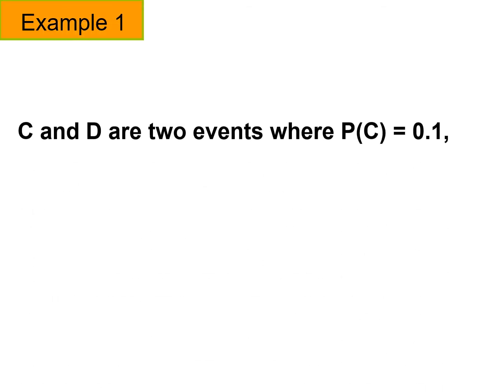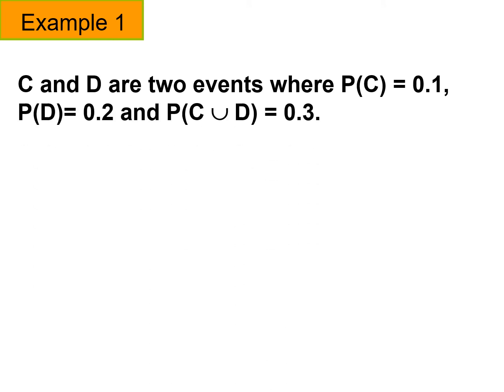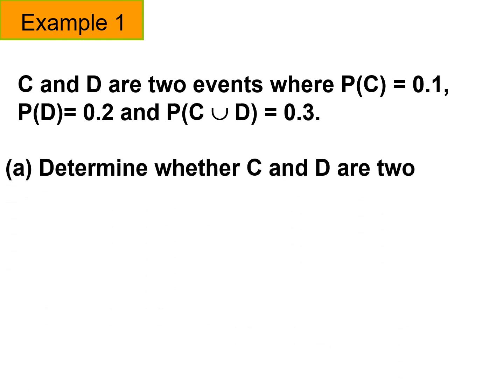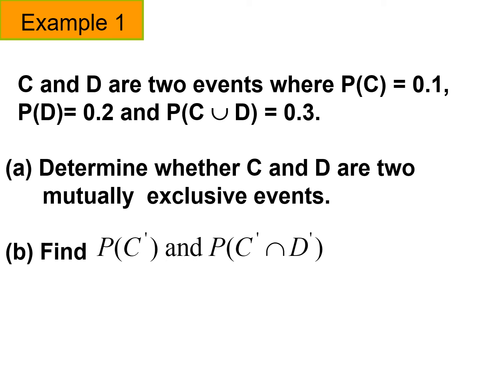Let's discuss Example 1. C and D are two events where the probability of C is 0.1 and the probability of event D is 0.2. Determine whether C and D are mutually exclusive events, and also find the probability of C prime, and find P(C' ∩ D').